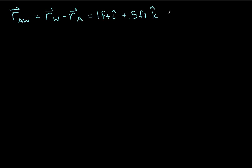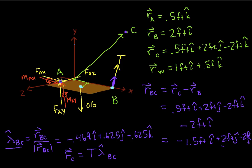And we get that this is just 1 foot i hat. Which, if we go back to our picture, we're saying that the distance from here to here is 1 foot in the x direction, which is good, because that happens to be right.